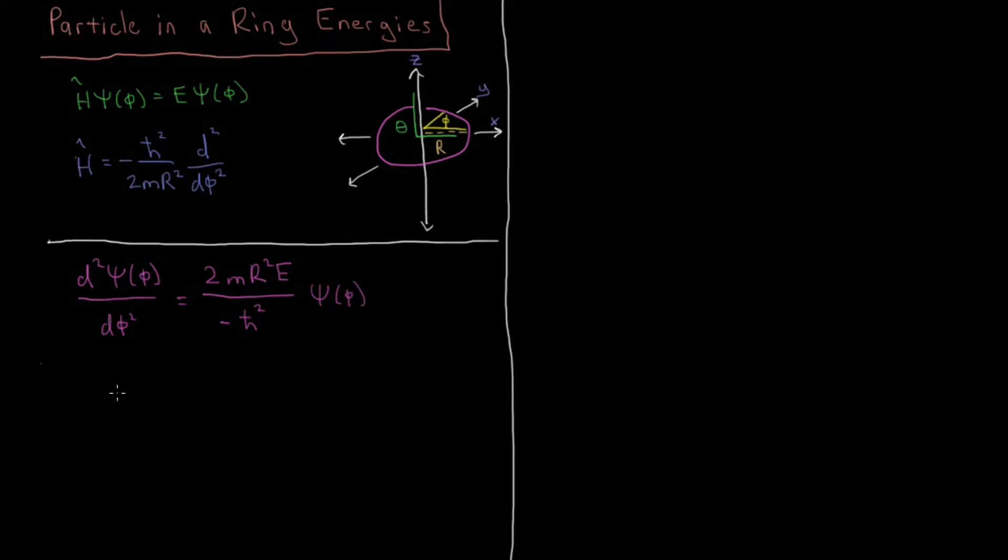Okay so what we can do now is we can define a constant called k and we can say that k equals r over h bar times the square root of 2 mass of particle times its energy. And when we do it like this, what this reduces to is we have the second derivative of our wave function d phi squared is going to be equal to this part over here is minus k squared times psi of phi.